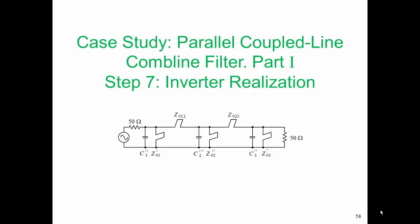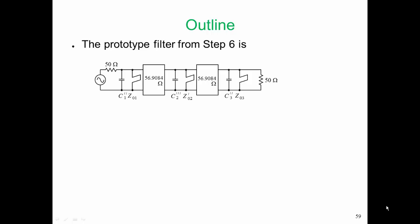In Step 7, we're going to realize the inverters. We've finished Step 6 with this prototype. We have a prototype which consists of three hybrid resonators, and the pairs of resonators are separated by an inverter. It is those inverters that we want to realize.